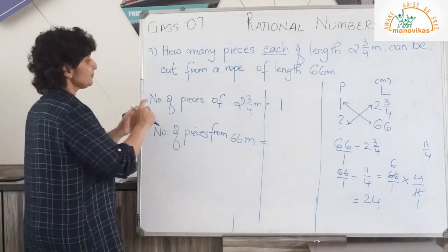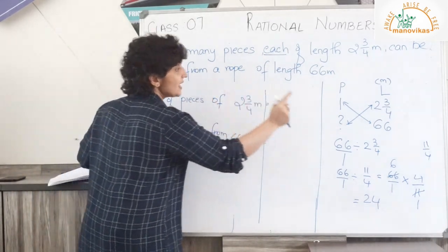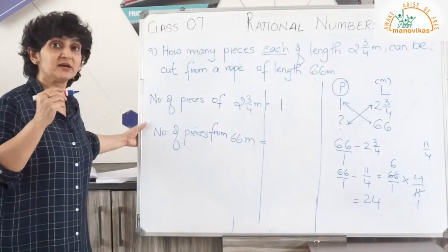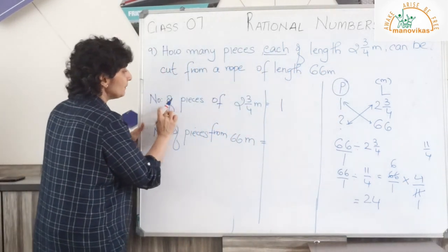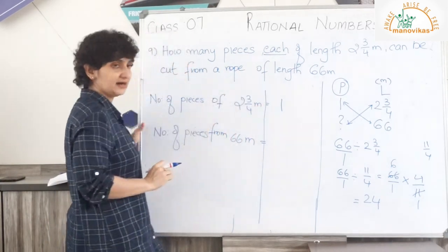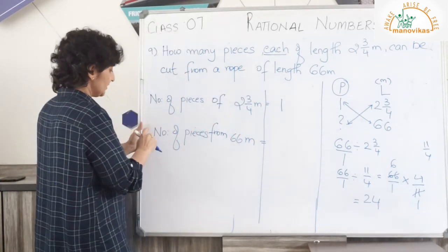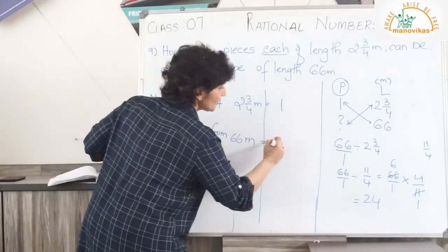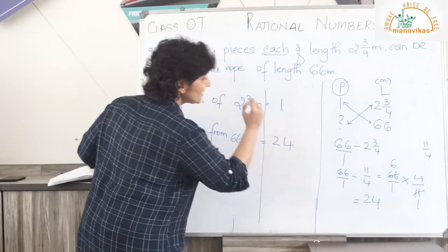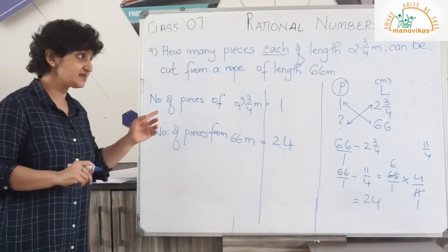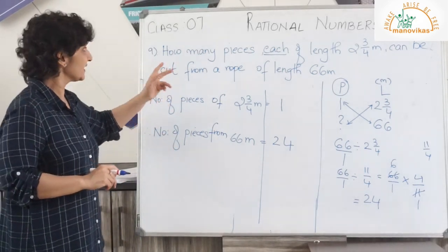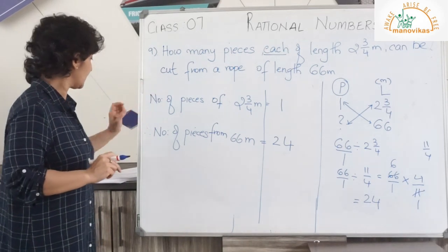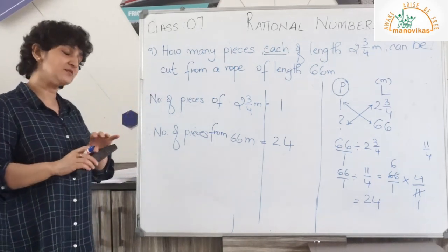Let's write our statement: number of pieces of 2 and 3 quarter meters will be 1. Therefore, the number of pieces from 66 meters will be 24 pieces. With this we finish exercise 2F. I have 2 fill-in-the-blanks left — I will do those and you can work out the rest of the sums at home.